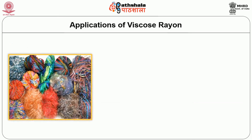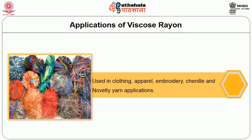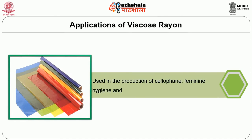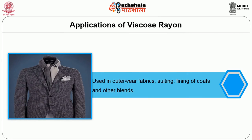Detailed applications of viscose rayon. Viscose rayon is used in clothing and apparel industry, used as embroidery thread, used in the formation of chenille yarn and novelty yarn applications. It is used in industrial textiles such as tire cords, hoses, conveyor belts, braided cord and agricultural textiles. Viscose rayon is also used in the production of cellophane and female hygiene products. Viscose is also used in outerwear fabrics, suitings, linings of coats and other blended materials.